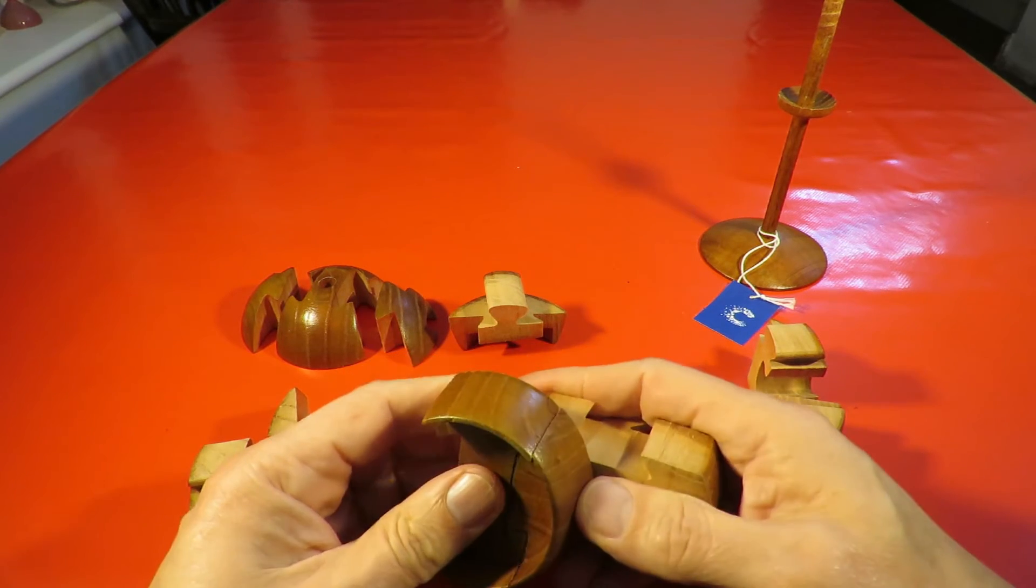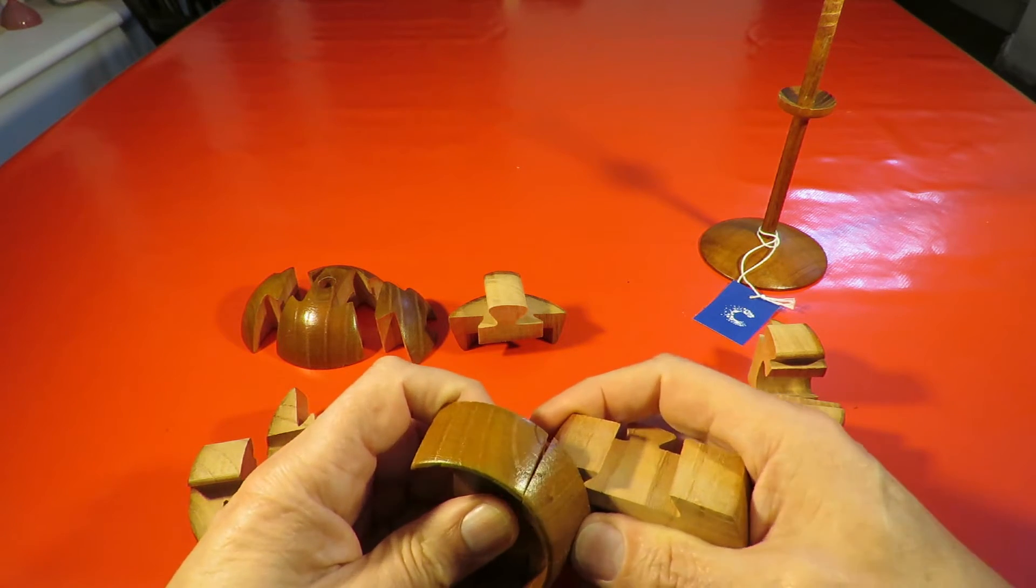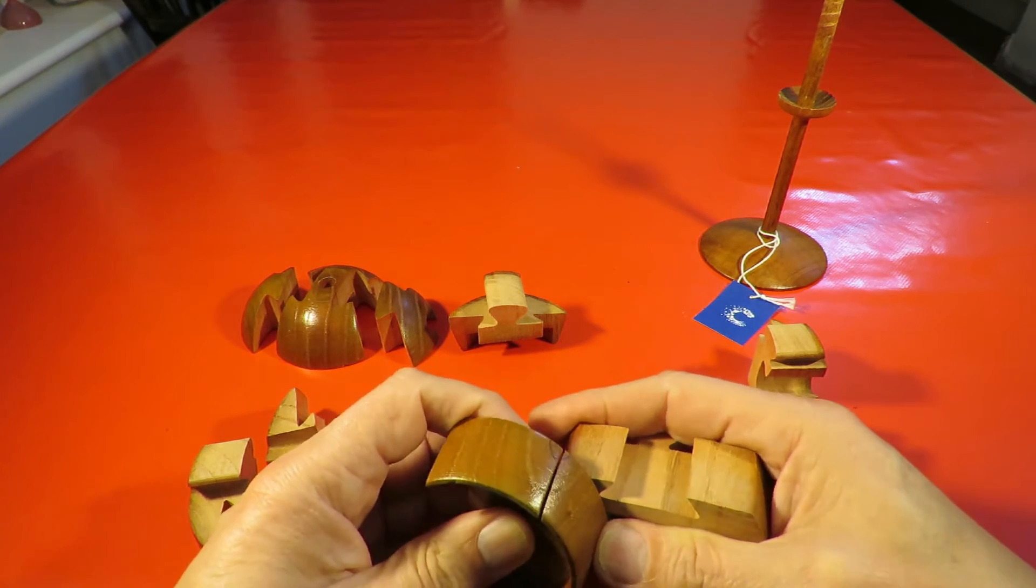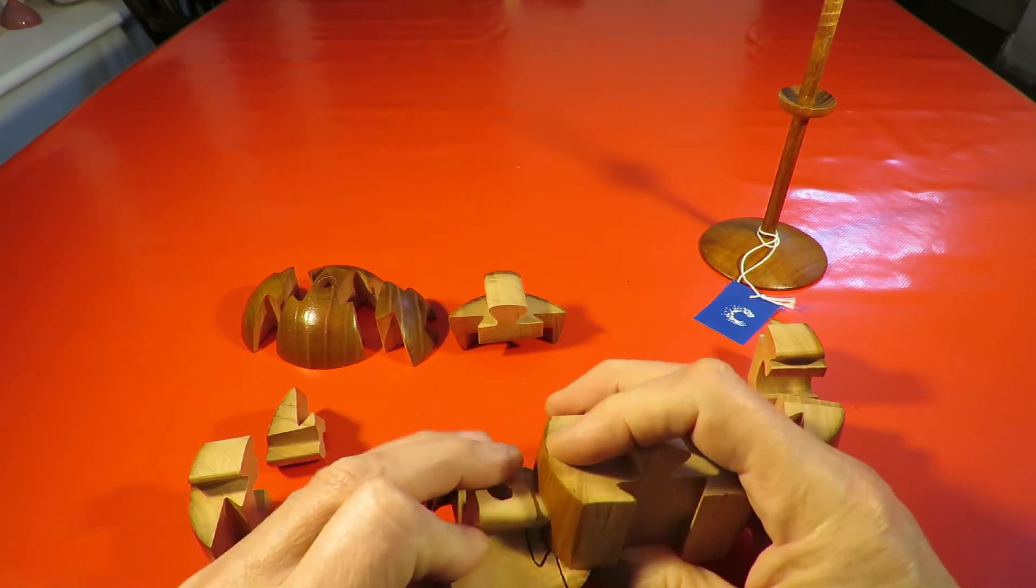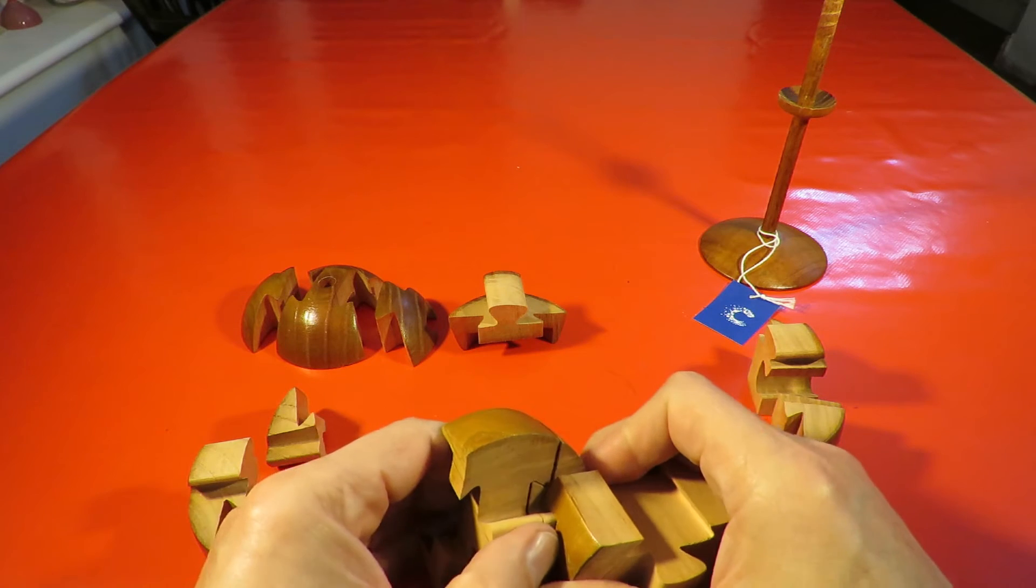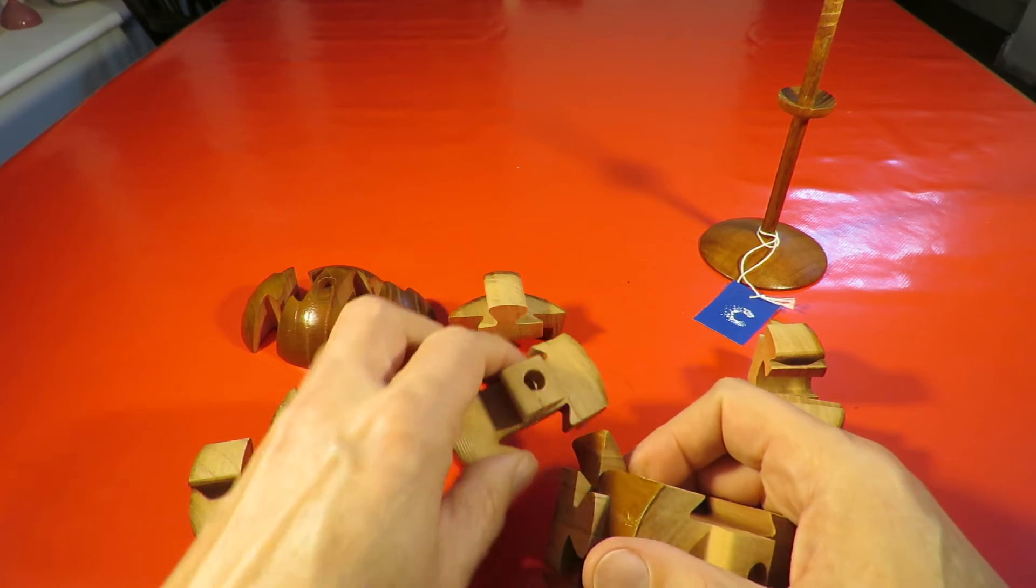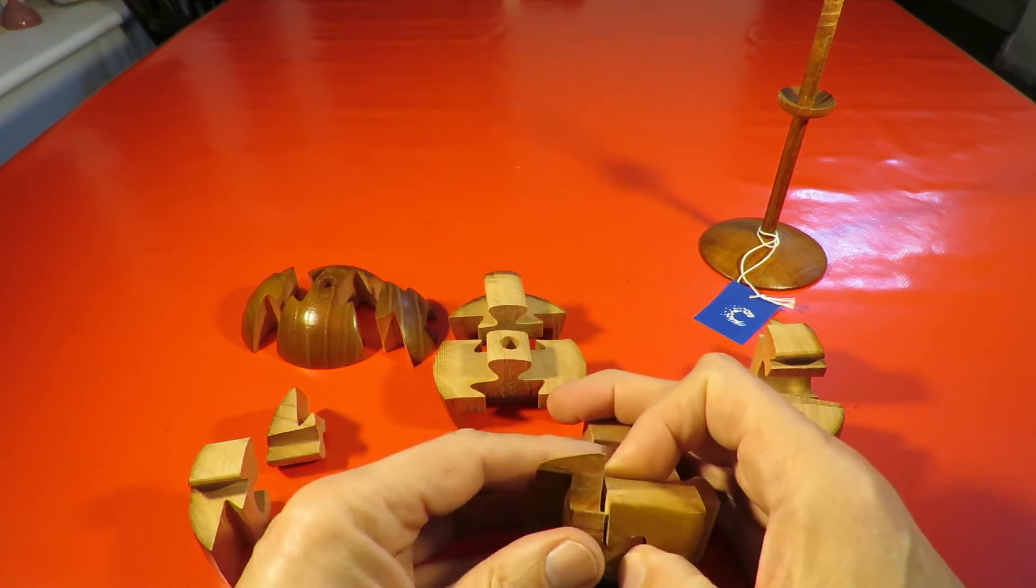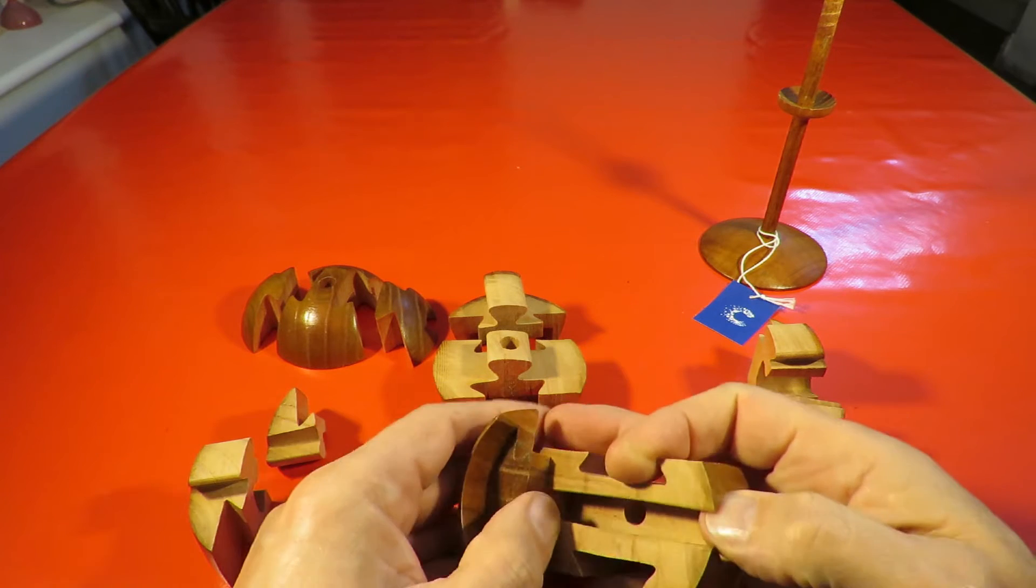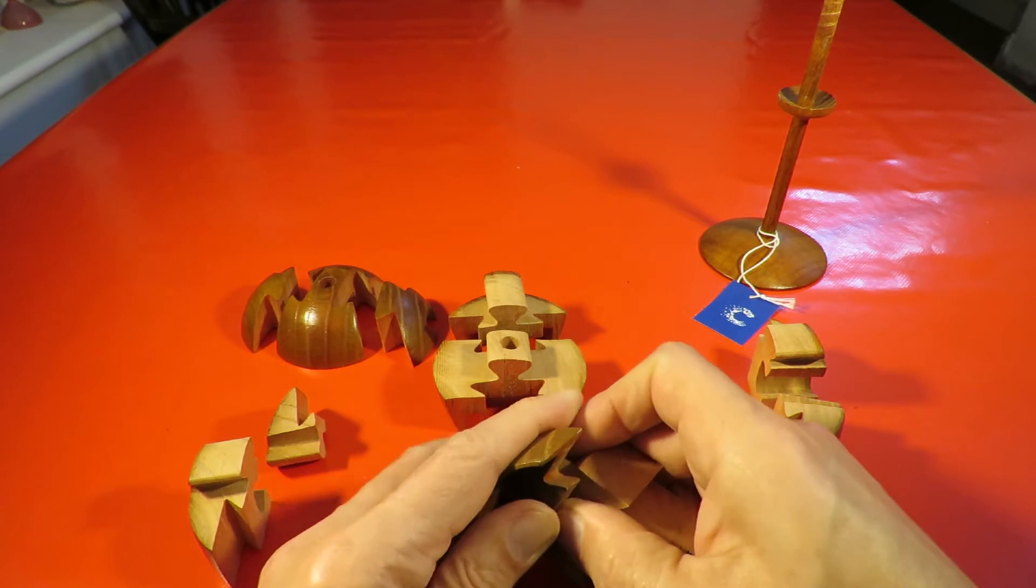I'm sure that's supposed to come off but that just seems very stiff. It may just be the wood's a bit distorted.